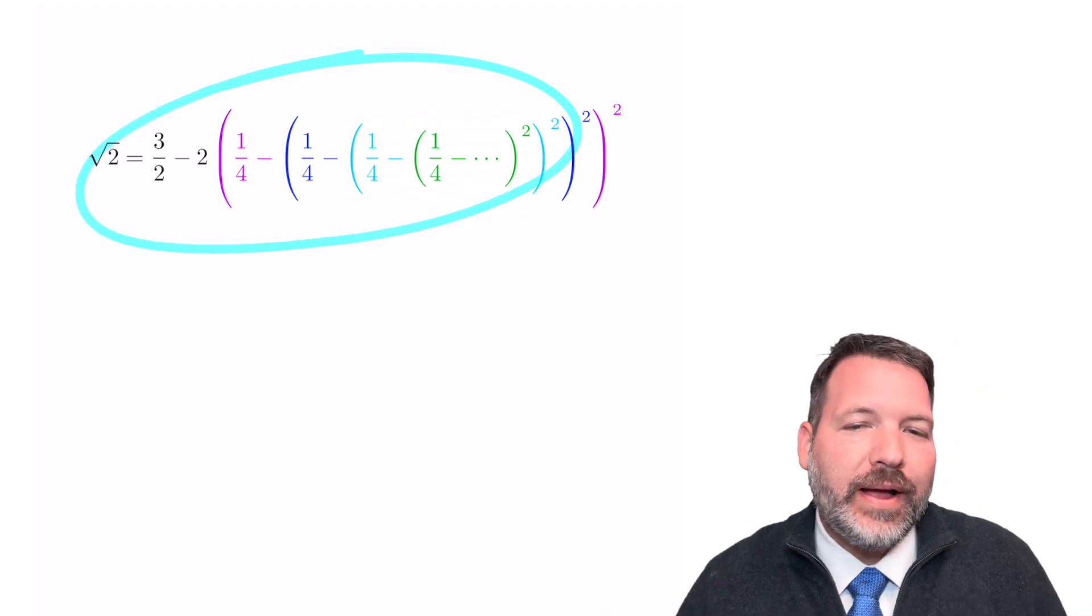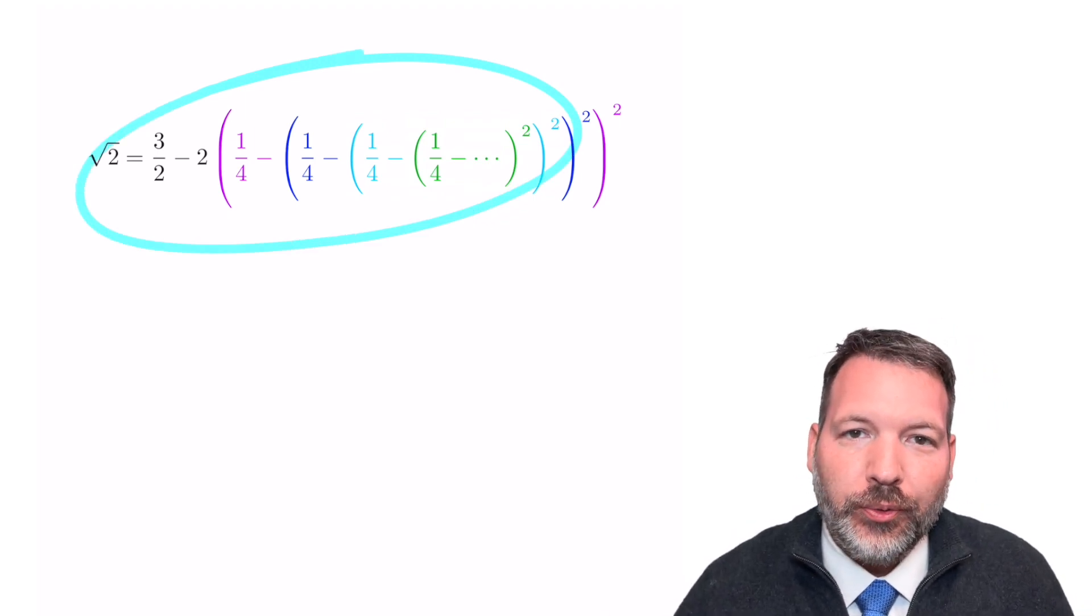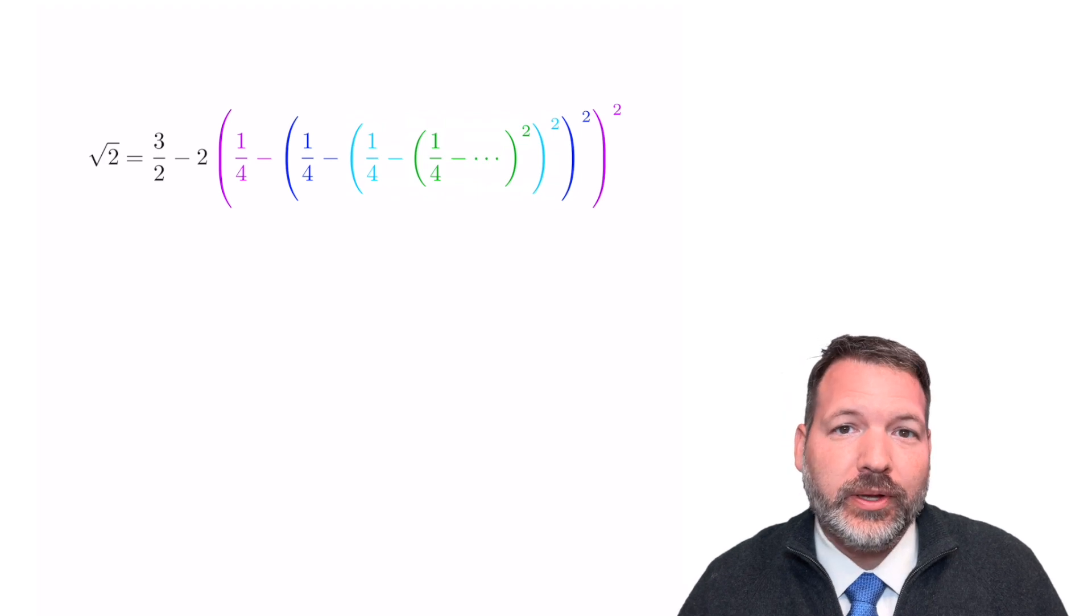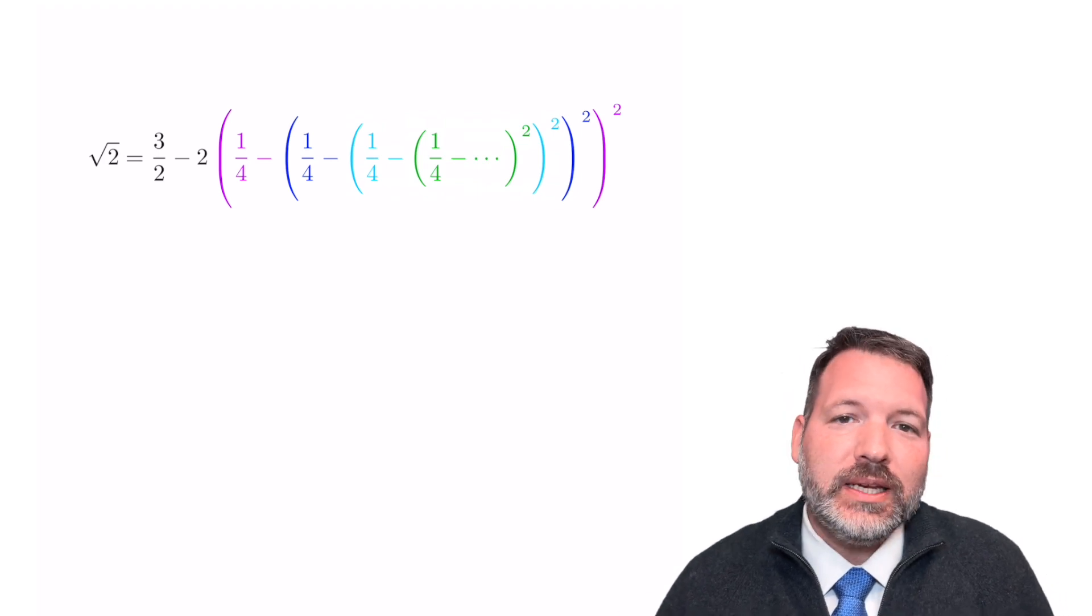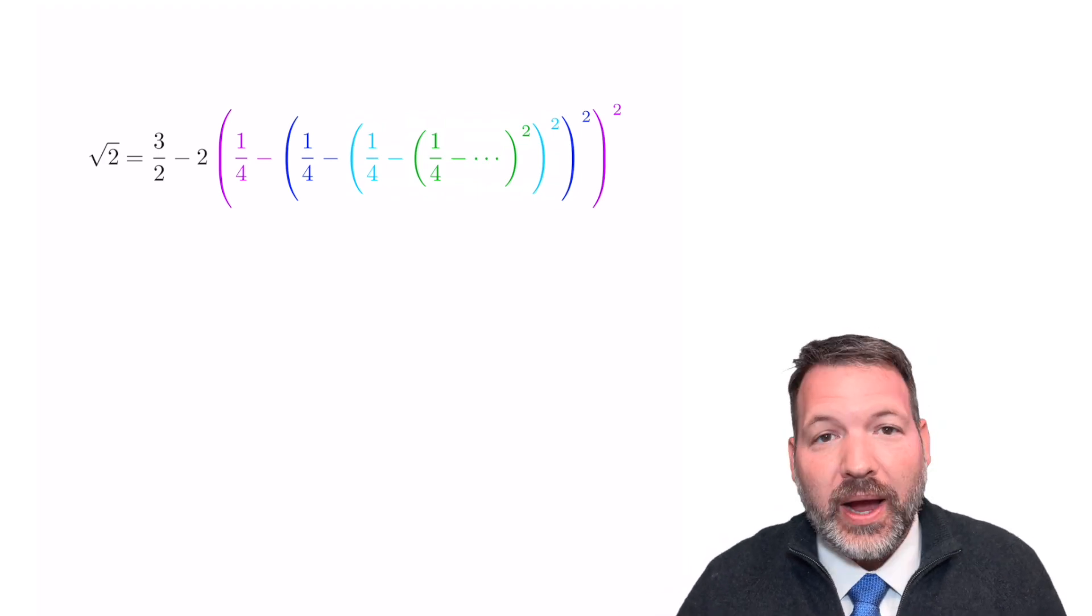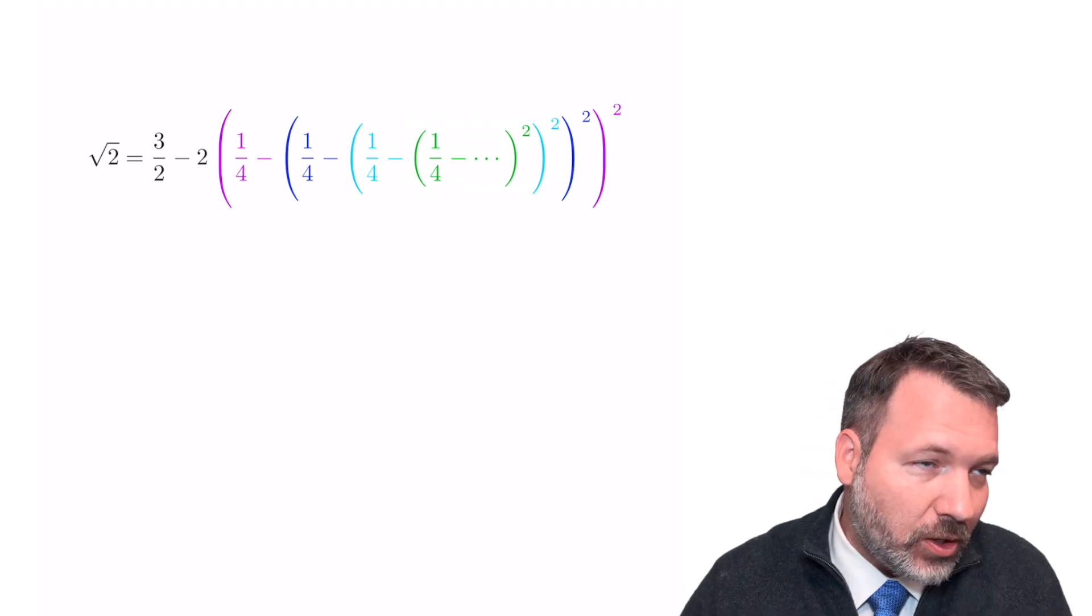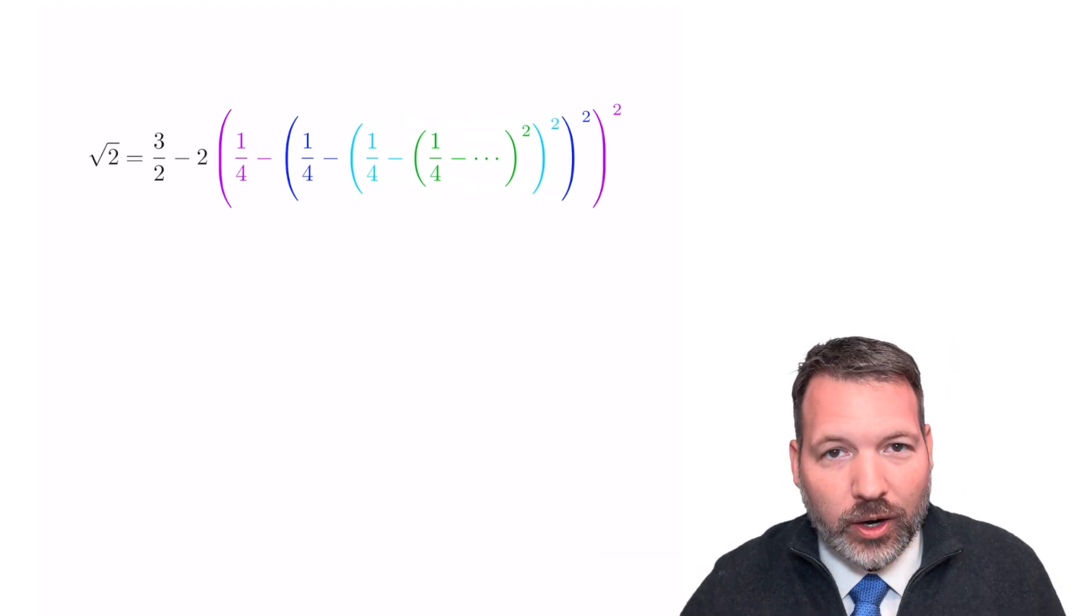This is just an absolutely wild way to write down the square root of 2. Three halves, that part's not so wild, minus 2 times this crazy nested series: one fourth minus the quantity, one fourth minus the quantity, one fourth minus the quantity, on and on forever, squared,